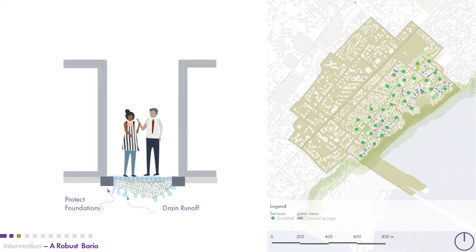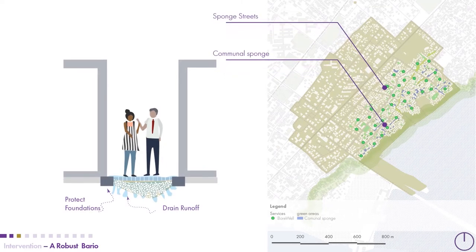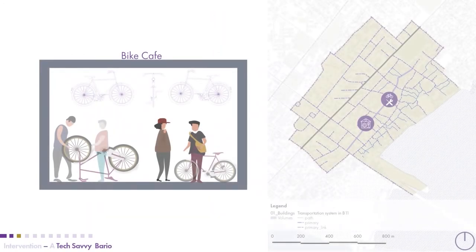We also needed to look at how to refill these aquifers, because as we extract through communal boreholes we should look at how to replenish them to avoid future sinking. This was achieved through the use of permeable street networks within the barrier, which will help increase the water stored in natural aquifers.